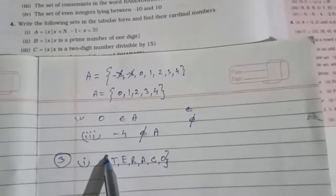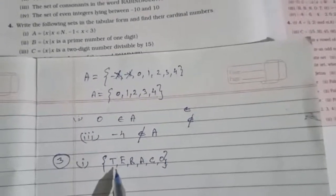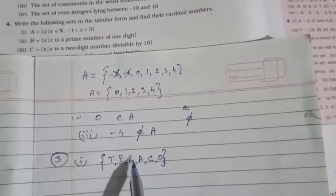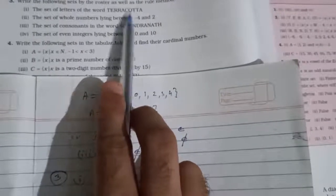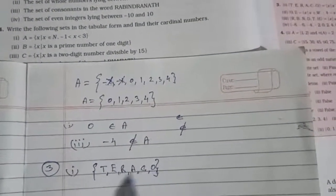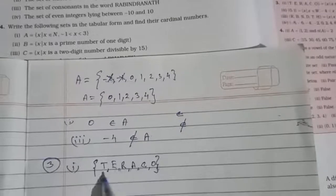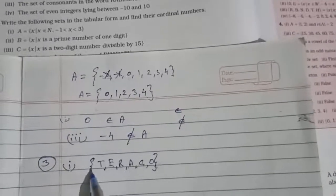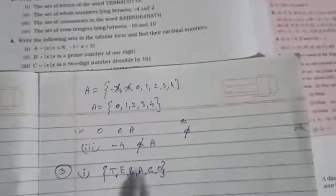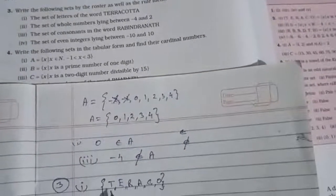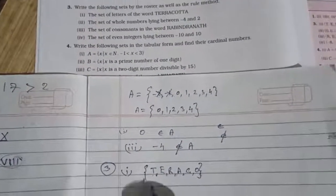For roster form, three conditions: first, curly brackets; second, commas; third, nothing can be repeated. In 'Tericota' — T, E, R, R — only a single R is written. Double T? No need to write it again as T is already written. So we write: {T, E, R, A, C, O}. Curly brackets are there, commas are there, and nothing is repeated. This is the roster form.